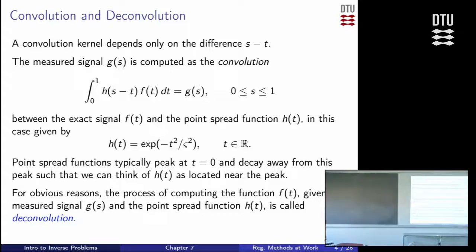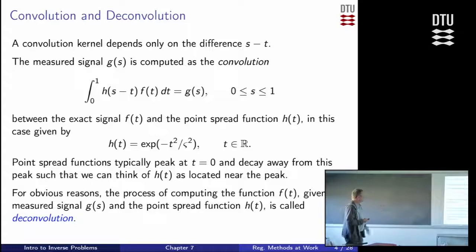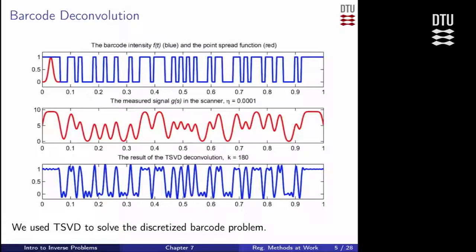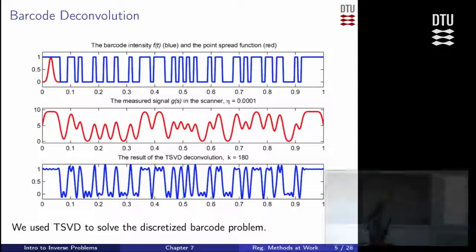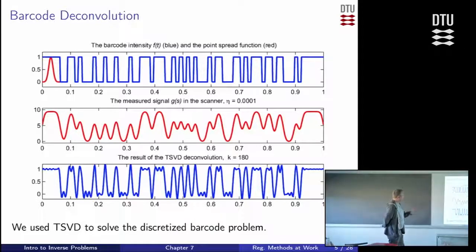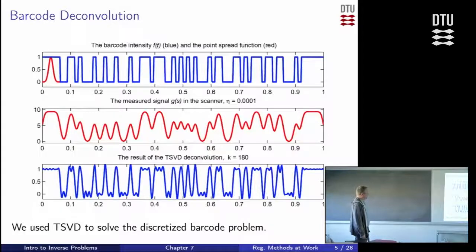Some people use the word deconvolution for all other inverse problems as well, so that might be a little confusing. But here it's specifically when we have this special kernel form. Of course we want to compute a regularized solution, and for example, if we plug all this into the mechanism we have already established — compute the singular value decomposition, compute a truncated SVD solution — we get something that looks a bit like that. So that's all right.